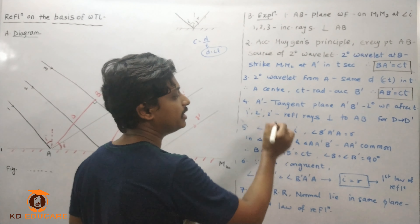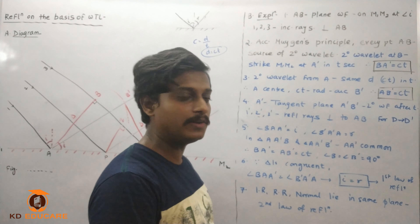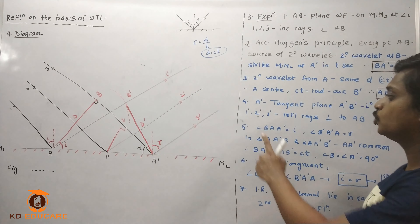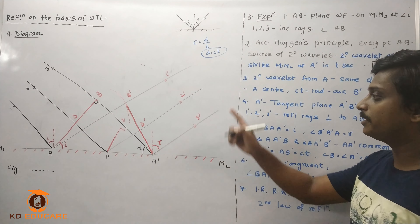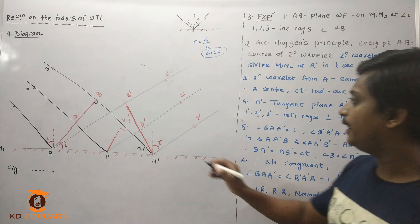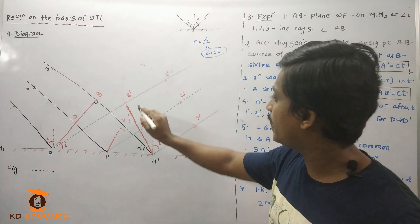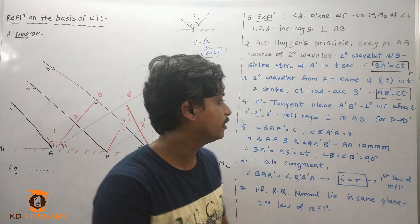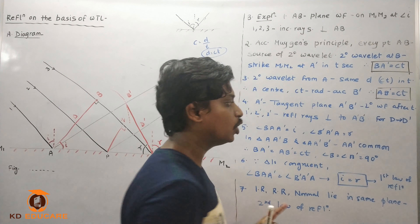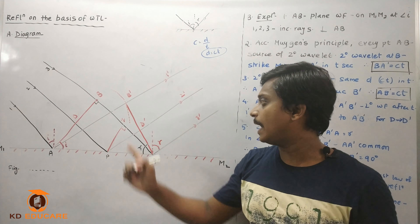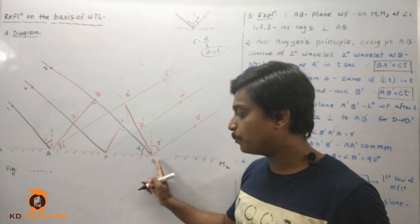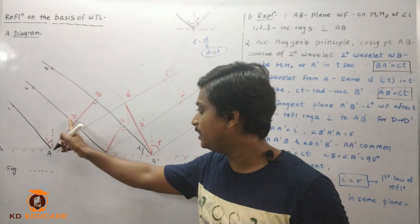Rays 1, 2, 3 are the reflected rays, which are perpendicular to A'B'. So A'B' is the reflected wavefront and the reflected rays are perpendicular to it.